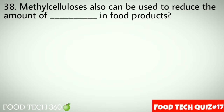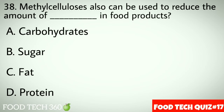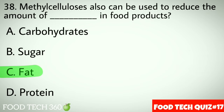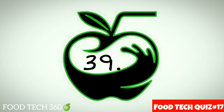Question number 38: Methyl cellulose can also be used to reduce the amount of dash in food products. Options: A. Carbohydrates, B. Sugar, C. Fat, D. Protein. Correct answer: C. Fat.